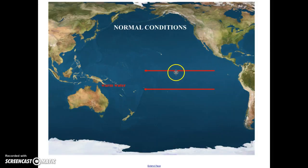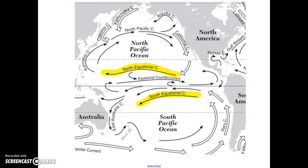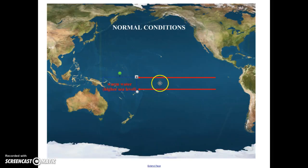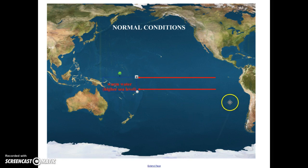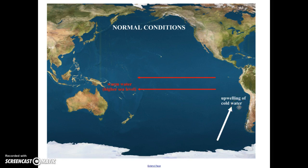This water is getting pushed to the west, and as a result, an ocean current forms. If you look at your ocean current map, you're going to notice the north equatorial current, which is flowing to the west, and the south equatorial current, which is also flowing towards the west. Because the warm water is getting pushed to the west, it allows cold water to come up along the coast of South America.